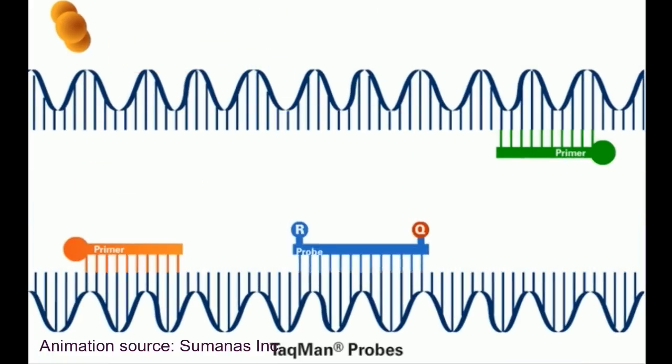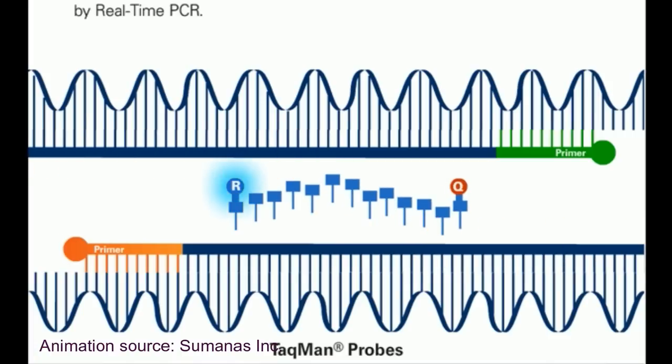After separation, the probe is designed to bind to the target DNA sequence. While the dye and quencher are intact, there is no fluorescence. But when polymerase elongates, it cleaves the probe and separates the reporter from its quencher, thus producing fluorescence, which can be captured as a signal by the real-time PCR machine.